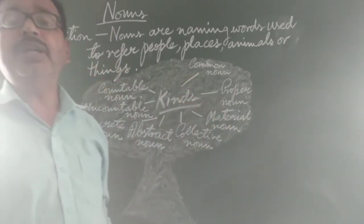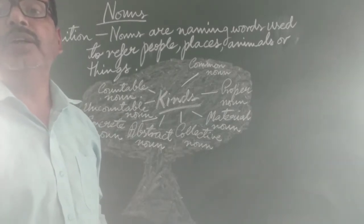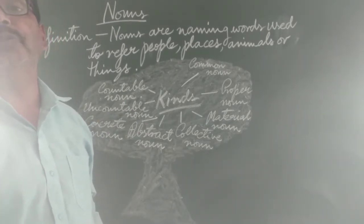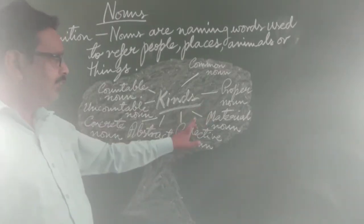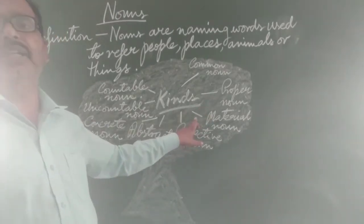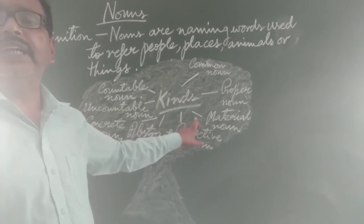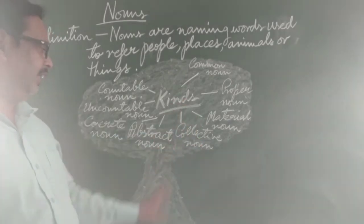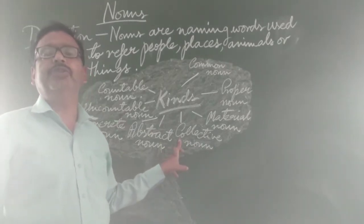And what is a Proper Naam? Any particular name of a river — for example, Ganga — or of a city — for example, Jaipur — these are Proper Naam. And what is a Material Naam? For example, silk, wool, gold, silver — these are Material Naam.